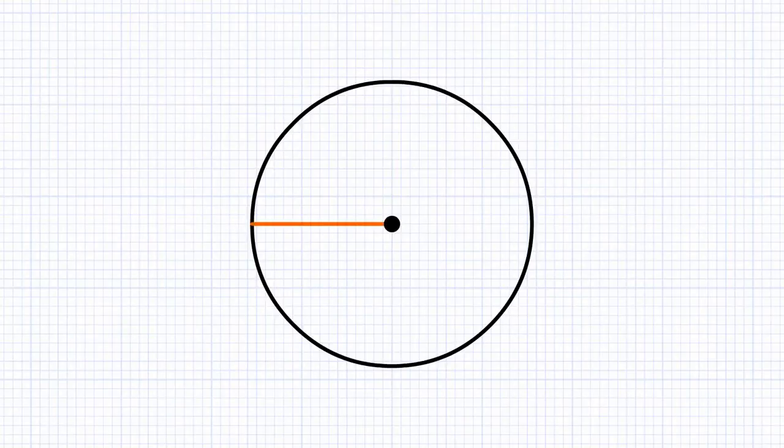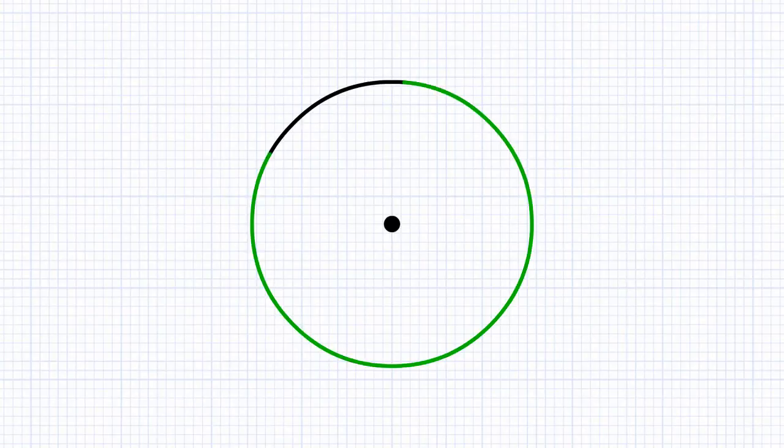Line segment from the center to any point on the circle is the radius. Distance around the edge of the circle is circumference.